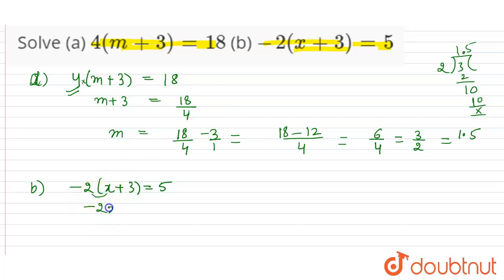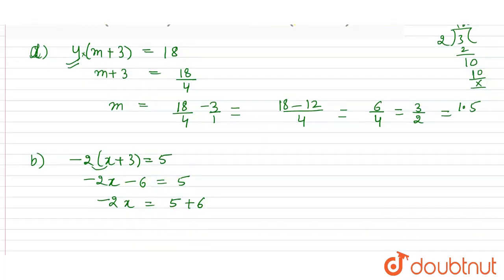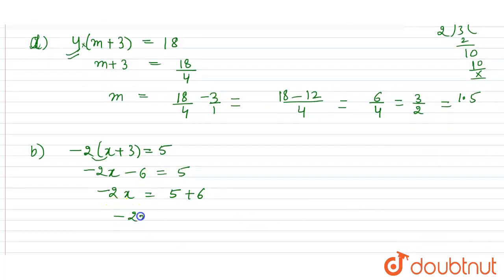So minus 2 into x is minus 2x and minus 2 into plus 3 is minus 6 which is equal to 5. So minus 2x will be equal to 5 and negative 6 will be equal to positive 6 on the right hand side.